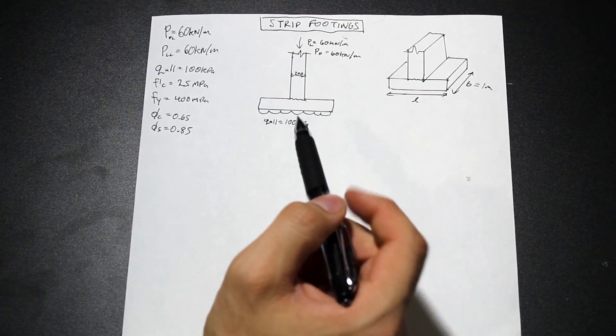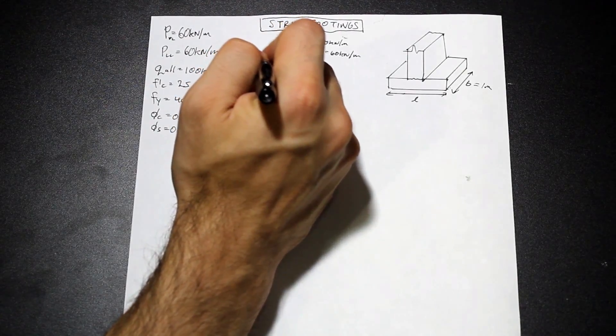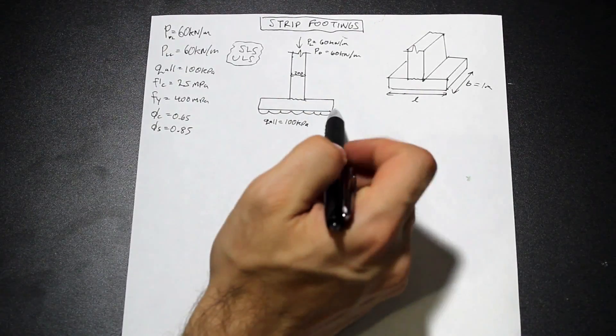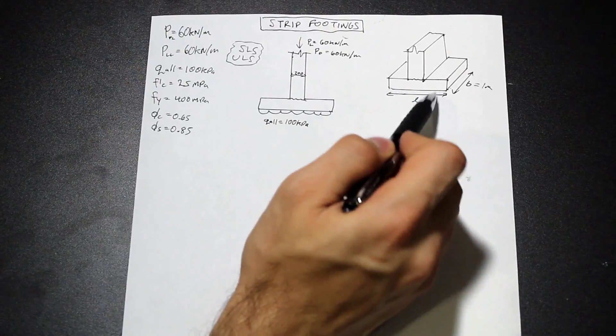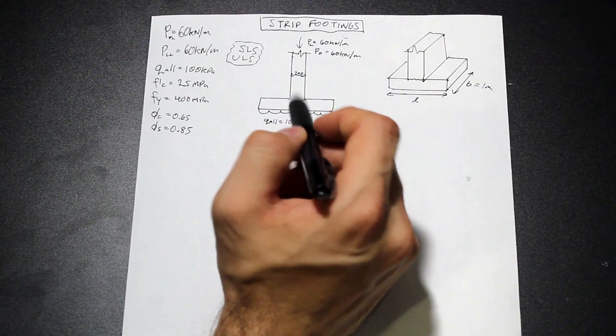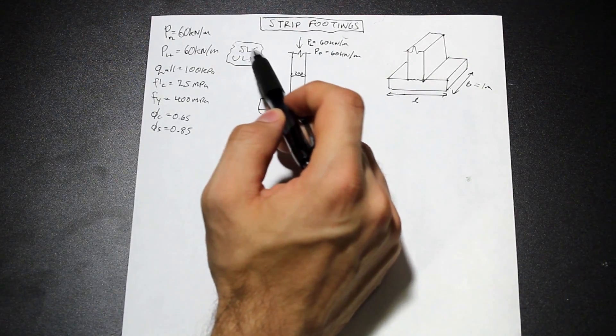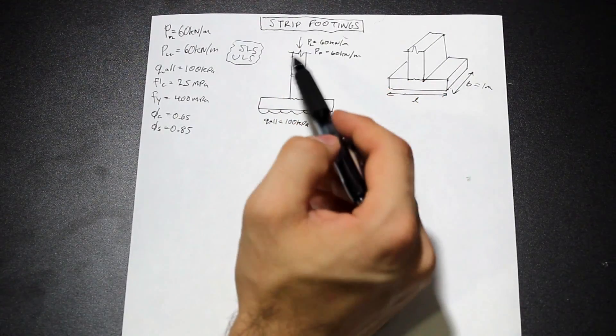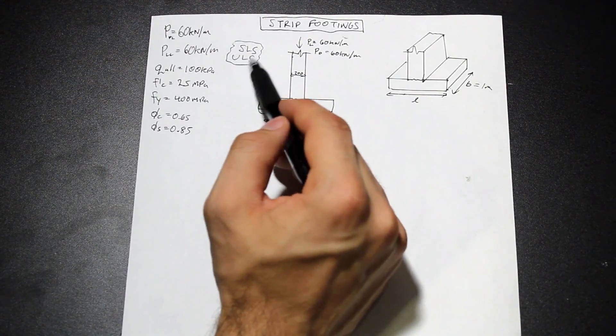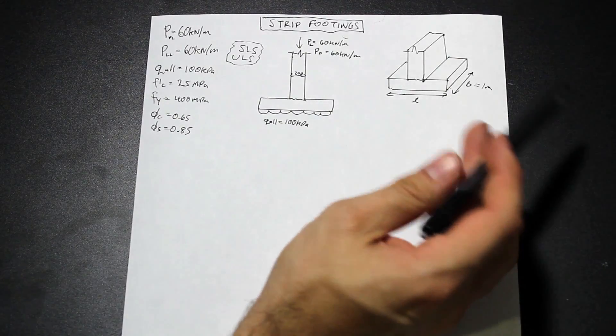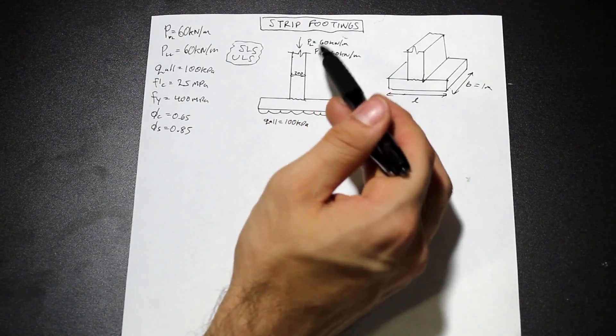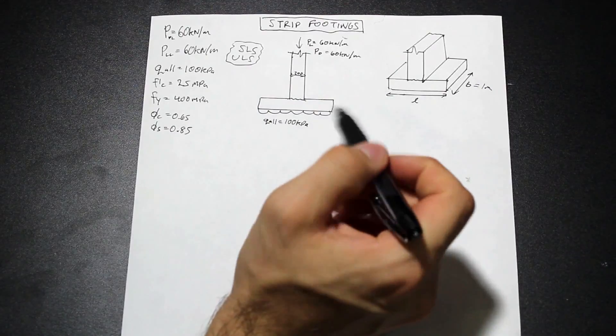But in a geotechnical report in real life, you would get what's called the SLS and the ULS bearing capacities. So what's given to us is the SLS. We almost always size our footing, the area of the footing, according to SLS. The reason why we do that is when geotechnical engineers factor their SLS bearing capacity, usually they use less of a factor than we do for our live and dead load. So if we were to use our factored loads and size it according to the ULS bearing capacity, we'd usually get a smaller area, which is not conservative. So we're almost always going to use SLS bearing capacity, and we're going to use the unfactored loads to find the area required. And that's what we're going to do right off the bat.